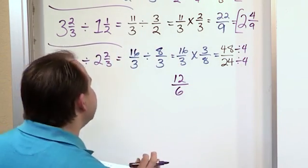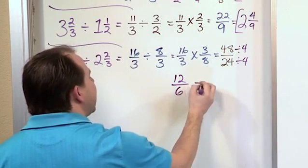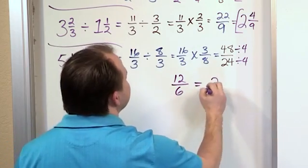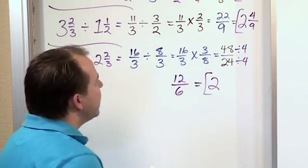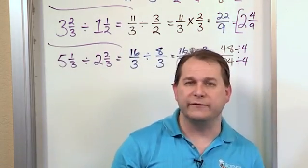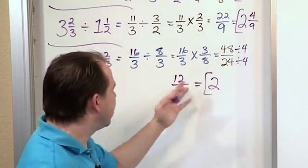So if you didn't see it before with 48 over 24, you should definitely see it now. You can do this division directly. 12 divided by 6 is just simply 2. That's the final answer. If you recognized it up here, 48 divided by 24 is also 2. You could have just written the answer straight out, but here we simplify just to show you.